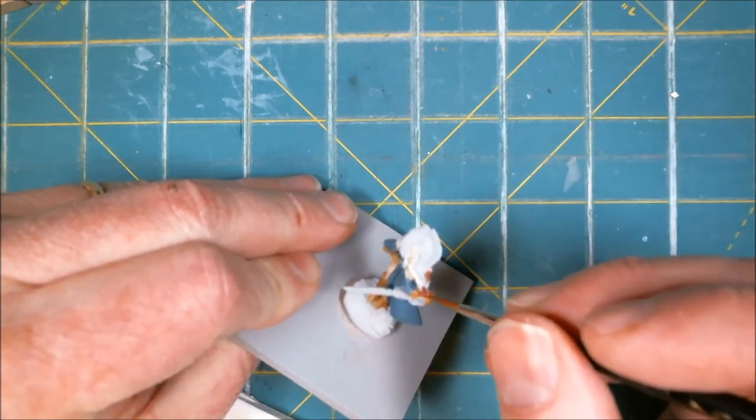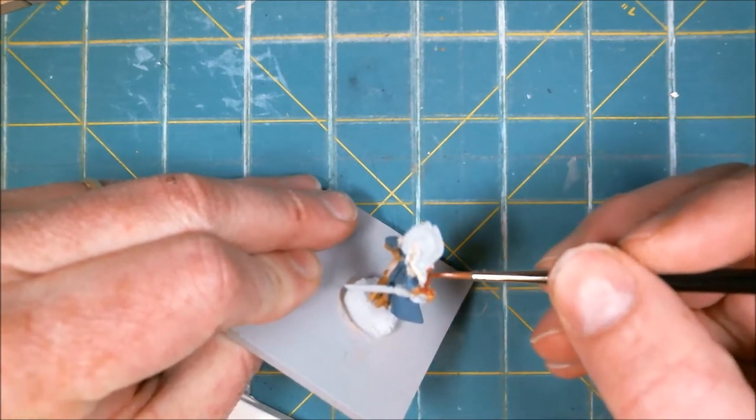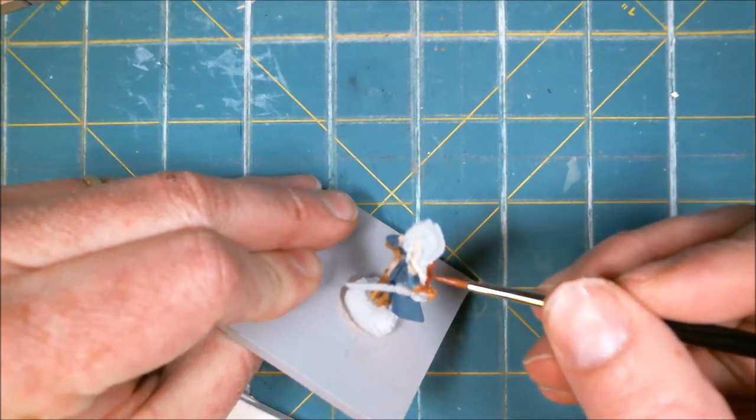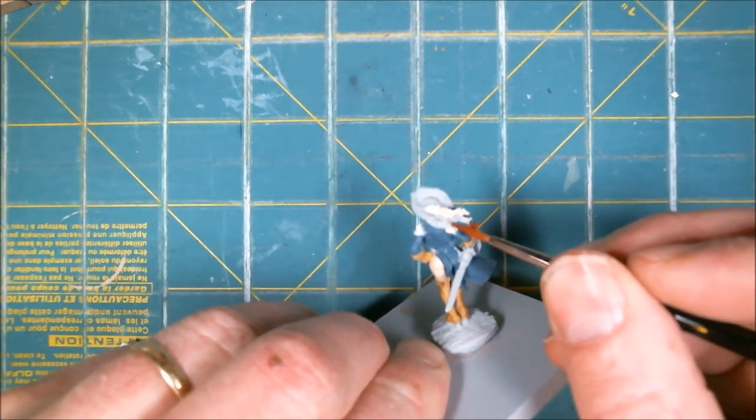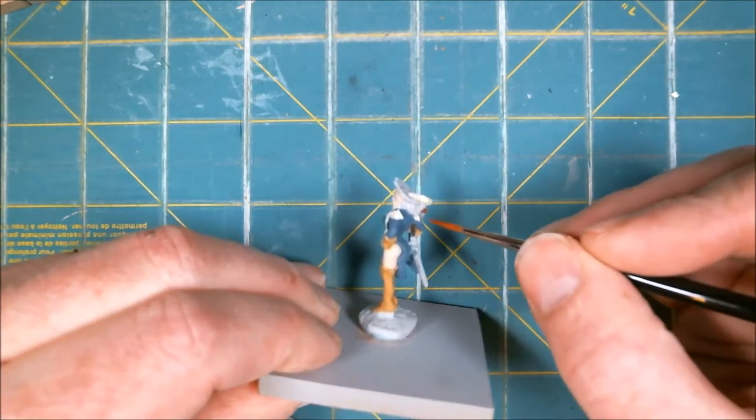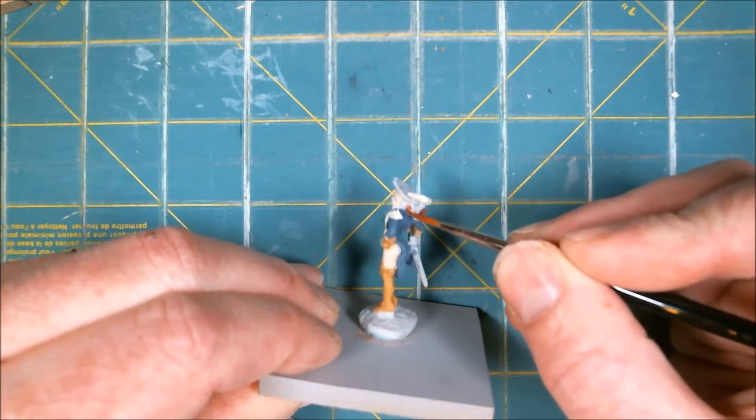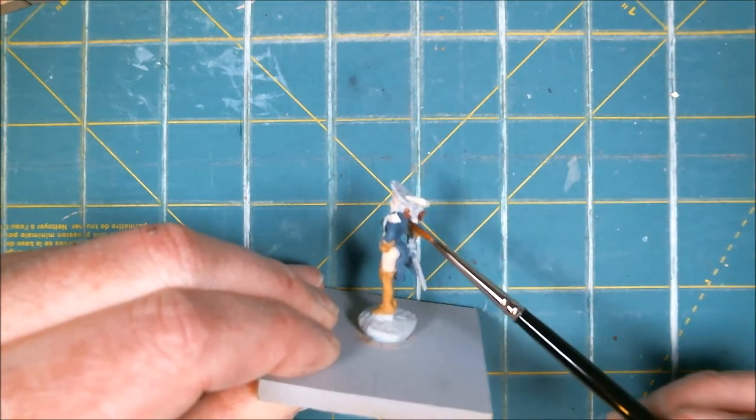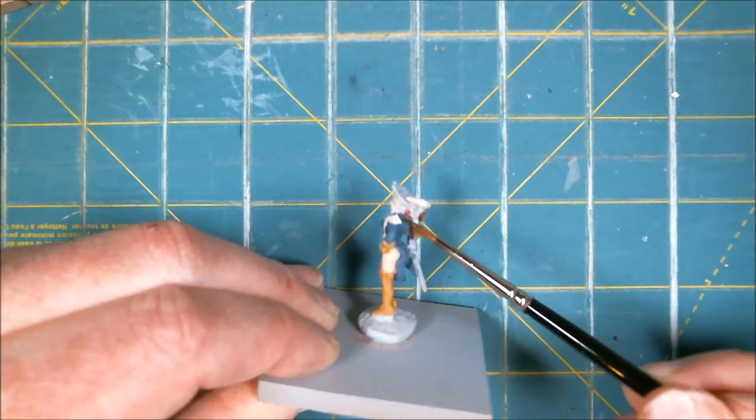But normally I would paint the hilt of color, and the blade of color, then the leather wrapping another leather color, on and on and on. And I'm kind of at the point where I'm going to paint a lot of it silver, some of it black, and just call it good.